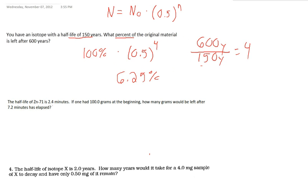If the half-life of zinc-71 is 2.4 minutes and you have 100 grams at the beginning, how many grams would you be left with? Okay, well this time the beginning amount is 100.0 grams multiplied by 0.5 always.